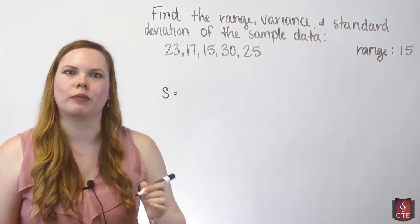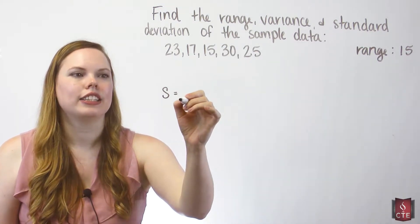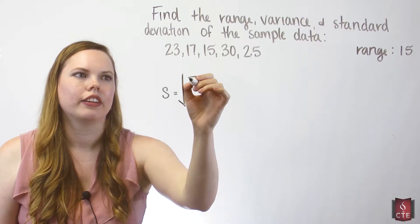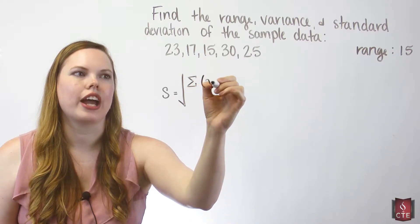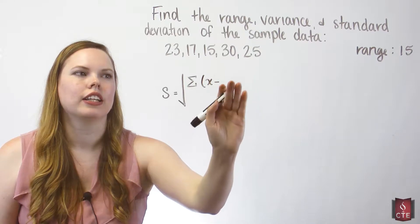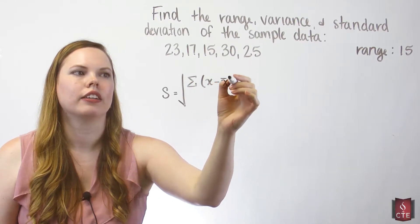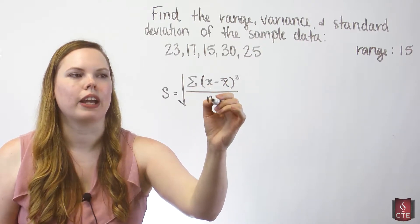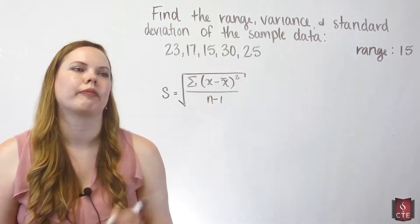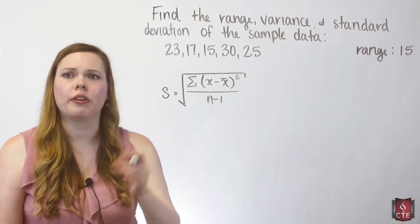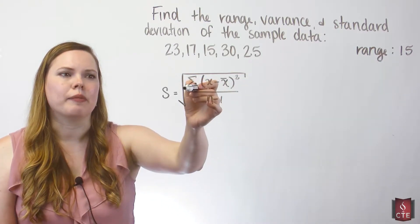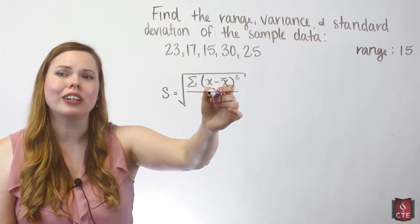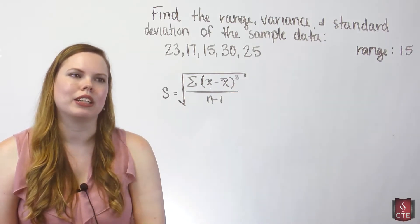So go ahead and write the formula up for us. Standard deviation is the square root of the sum of each x minus the mean squared divided by n minus 1. So I would read this as the square root of the sum of all the x's minus the mean squared, and we divide that by n minus 1.